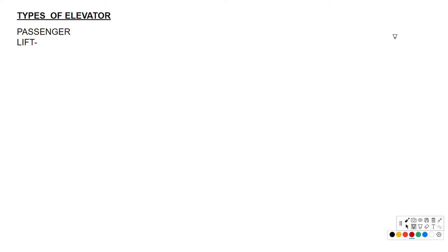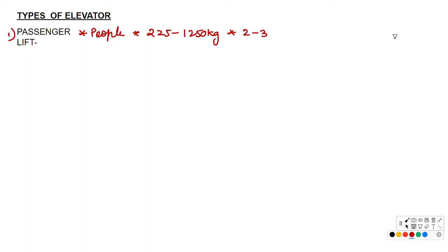Let's discuss the types of elevators. First is the passenger elevator, which is designed to move people from one floor to another. It has a capacity of 225 to 1,250 kg. The speed is 2 to 3 meters per second; if the building exceeds 10 floors, the speed can be 3 to 10 meters per second.